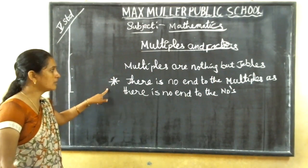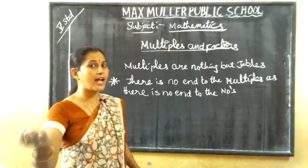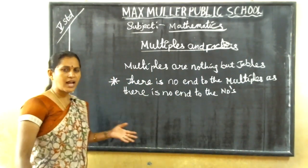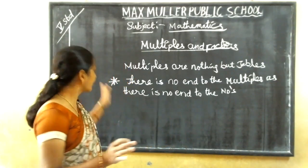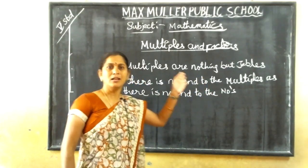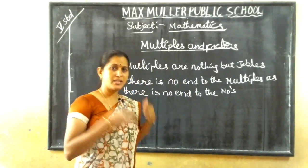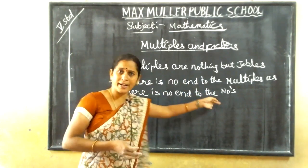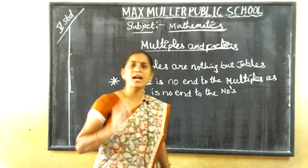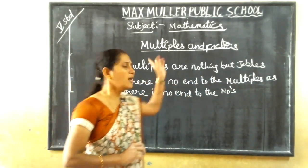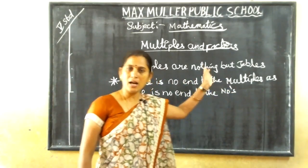Note it down: there is no end to the multiples as there is no end to the numbers. There is no end to the numbers — infinite. Like that, multiples are also infinite. Infinite means no end. If the numbers are there, multiples also will be there — the tables also. So, seven ones are seven, seven twos are fourteen, seven threes are twenty-one, seven fours are twenty-eight.